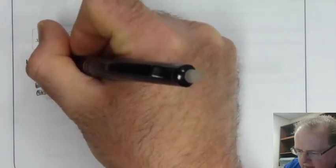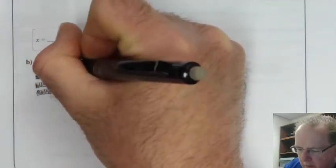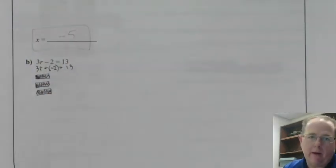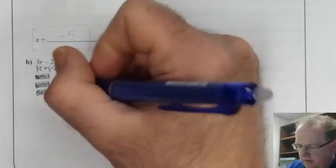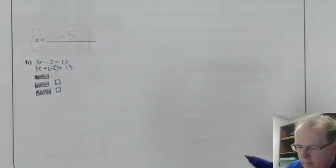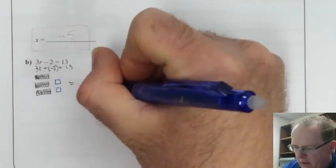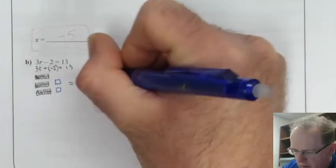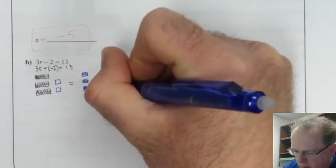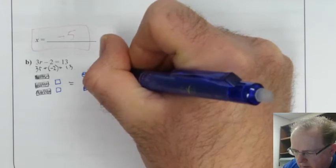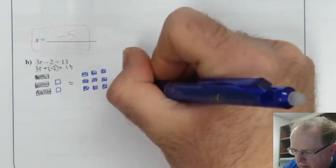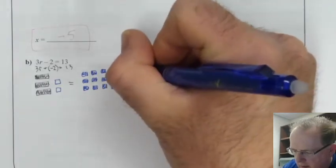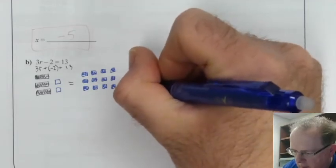3r plus, so subtracting is the same as adding the opposite, so adding negative 2. You can rewrite it that way if you want. So then that means we're going to draw two negative tiles on the left. That is equal to 13. So 1, 2, 3, 4, 5, 6, 7, 8, 9, 10, 11, 12, 13.